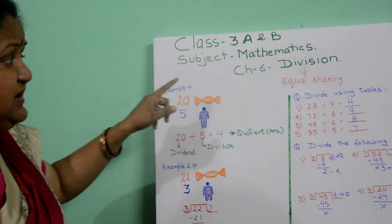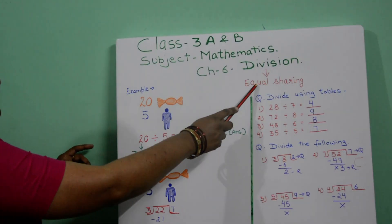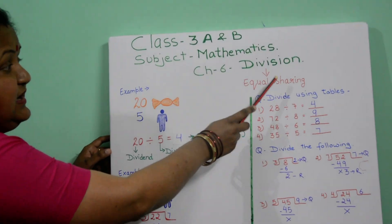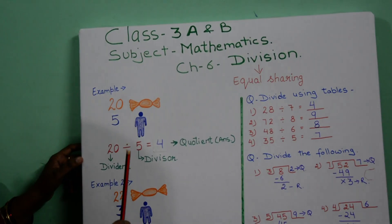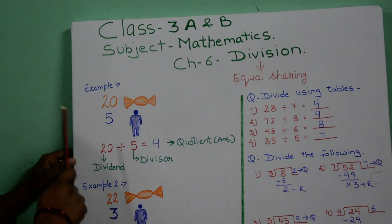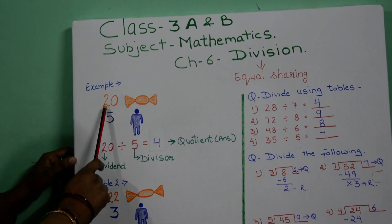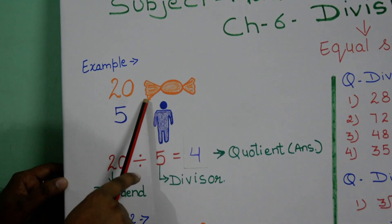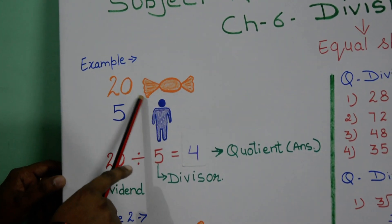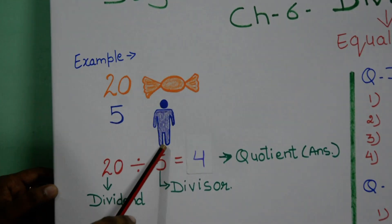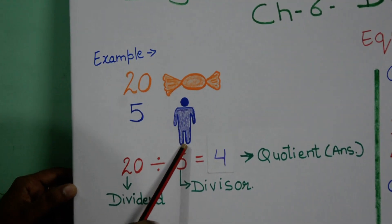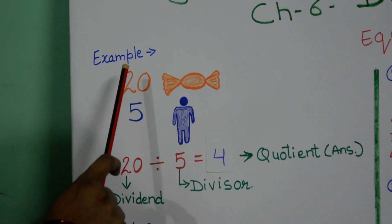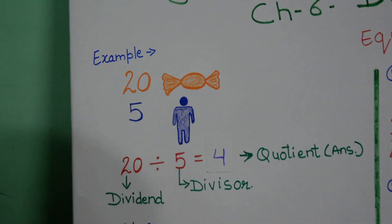Division means equal sharing. I am explaining you this using this example. The first example is: I gave you 20 toffees and you are 5 friends, and I told you to divide these toffees among 5 of you.